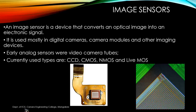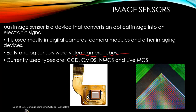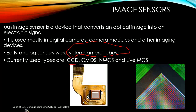Let's learn about image sensors. An image sensor is a device that converts an optical image into an electrical signal, mostly used in digital cameras, camera modules, and other imaging devices. Before the invention of modern image sensors, we used video camera tubes based on vacuum tubes — the technology used in older analog television. Now we have modern sensors like CCD, CMOS, NMOS, and Live MOS technology.